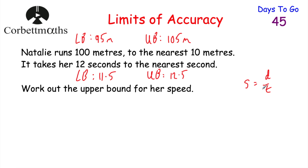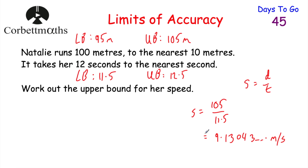Remember speed is found by doing distance divided by time. We want to find the upper bound for her speed — that means the greatest possible speed, which would be the greatest distance in the lowest time. So speed equals 105 metres divided by 11.5 seconds, which gives 9.13043... metres per second. That's the upper bound for her speed. If we were asked for the lower bound, we would do the smallest distance in the longest time: 95 divided by 12.5, giving a slower speed as the lower bound.